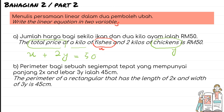Second example: the perimeter of a rectangle with length 2x and width 3y is 45 cm. We let x represent length and y represent width.